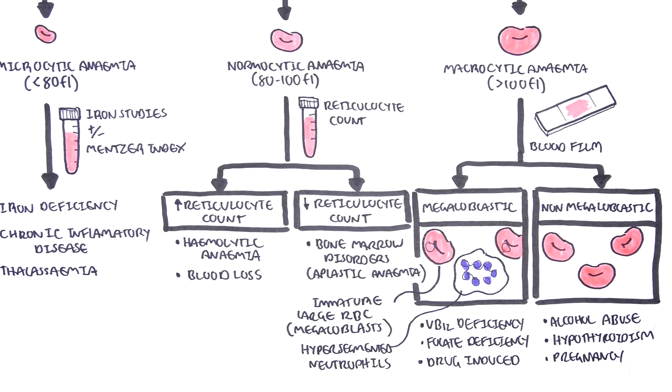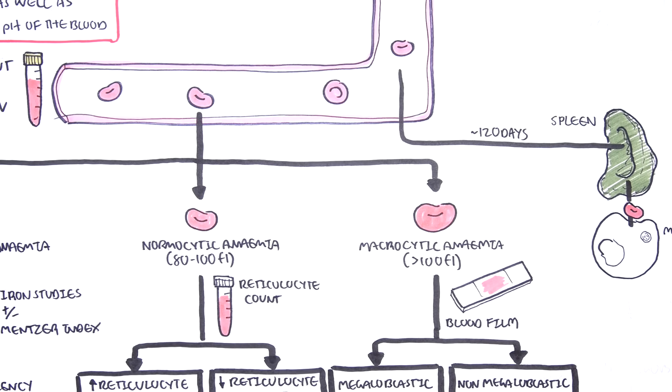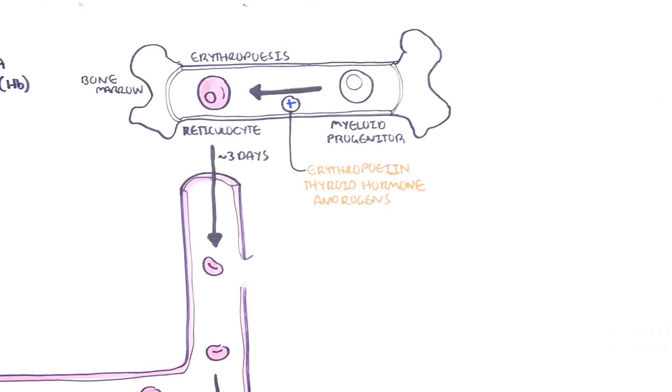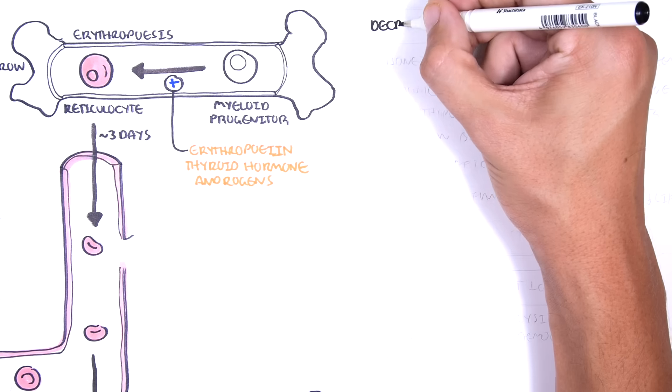Anemia can be categorized based on the size using the mean corpuscular volume, as we have talked about. Another way to categorize anemia is by the mechanism of anemia. We can easily categorize anemia in this way by looking at the red blood cell life cycle.